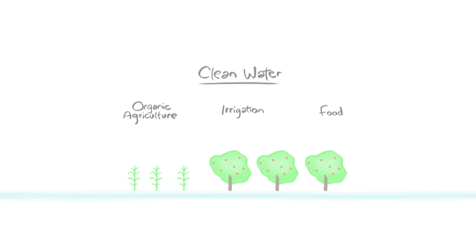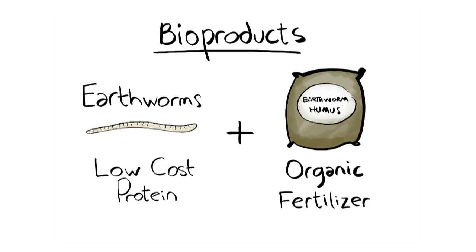Along with clean water, Biofiltro produces an abundance of earthworms. The earthworms can be harvested as a healthy and inexpensive source of protein. The earthworm humus is one of the best organic fertilizers, an important component in healthy, high-quality food.